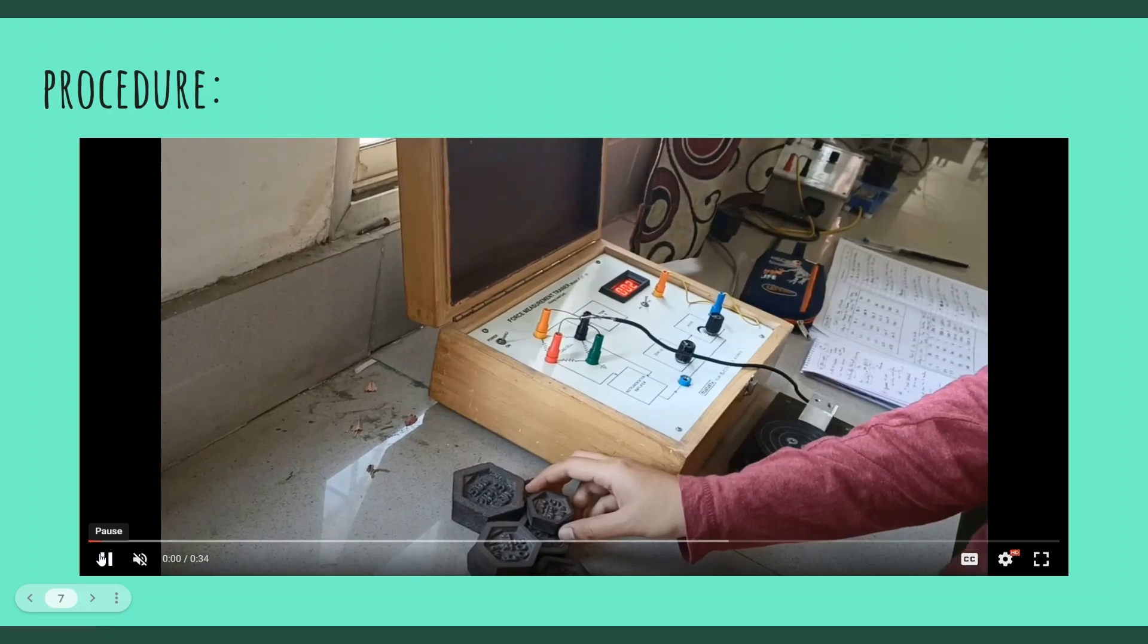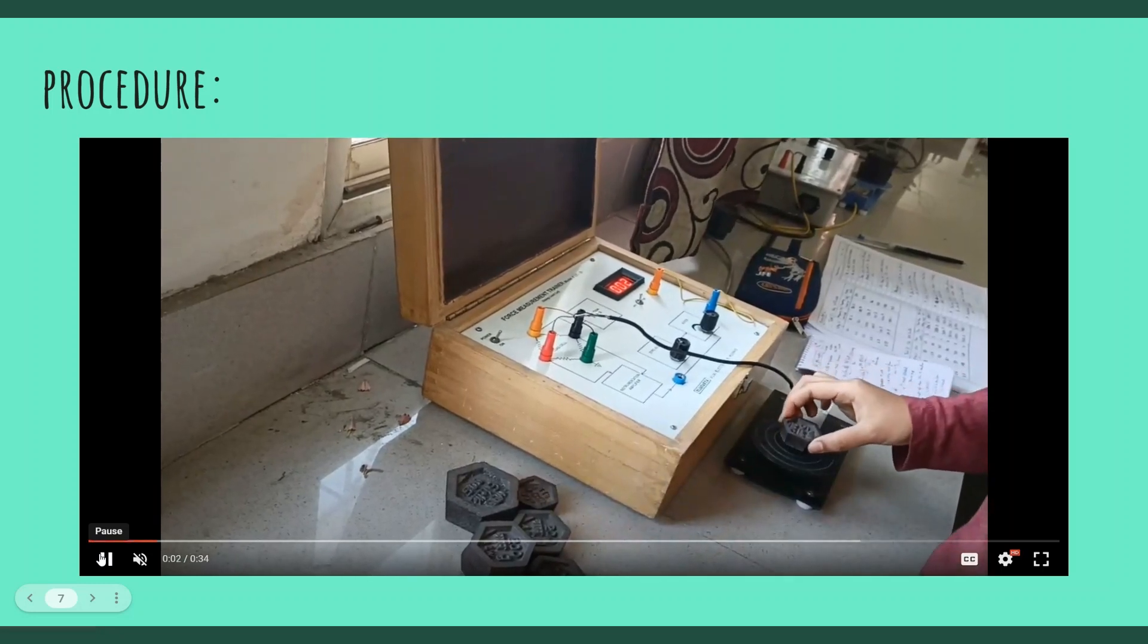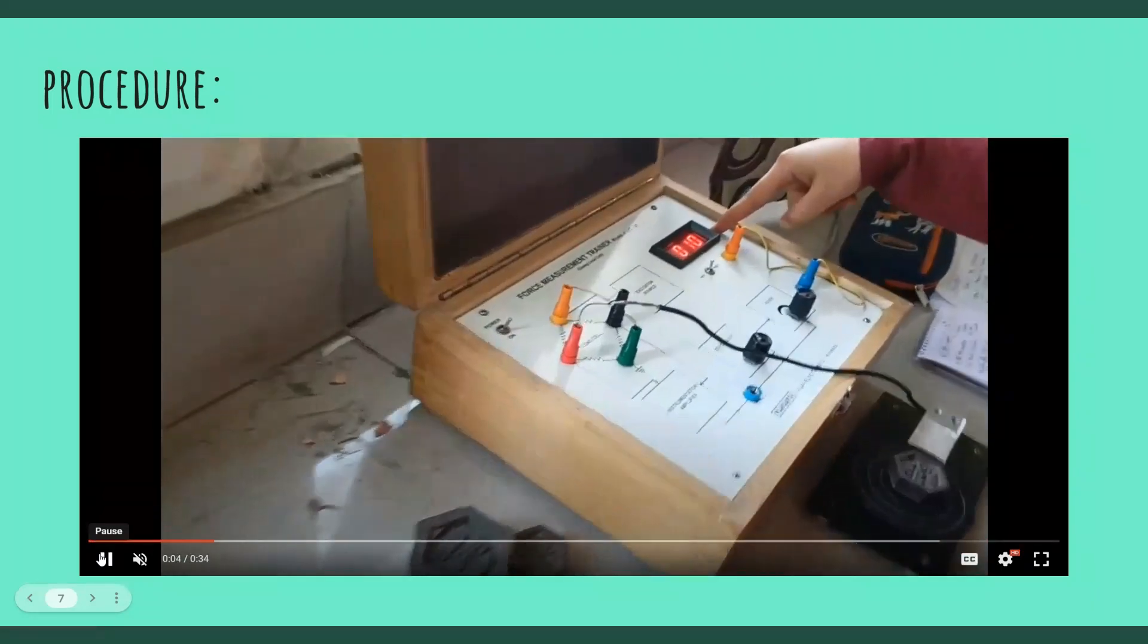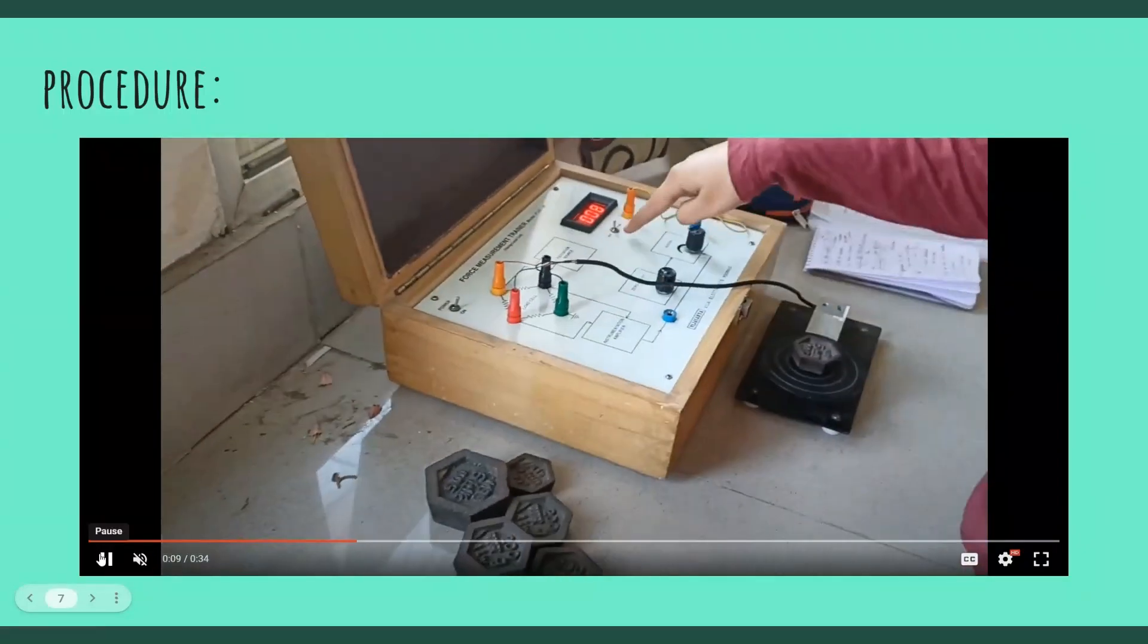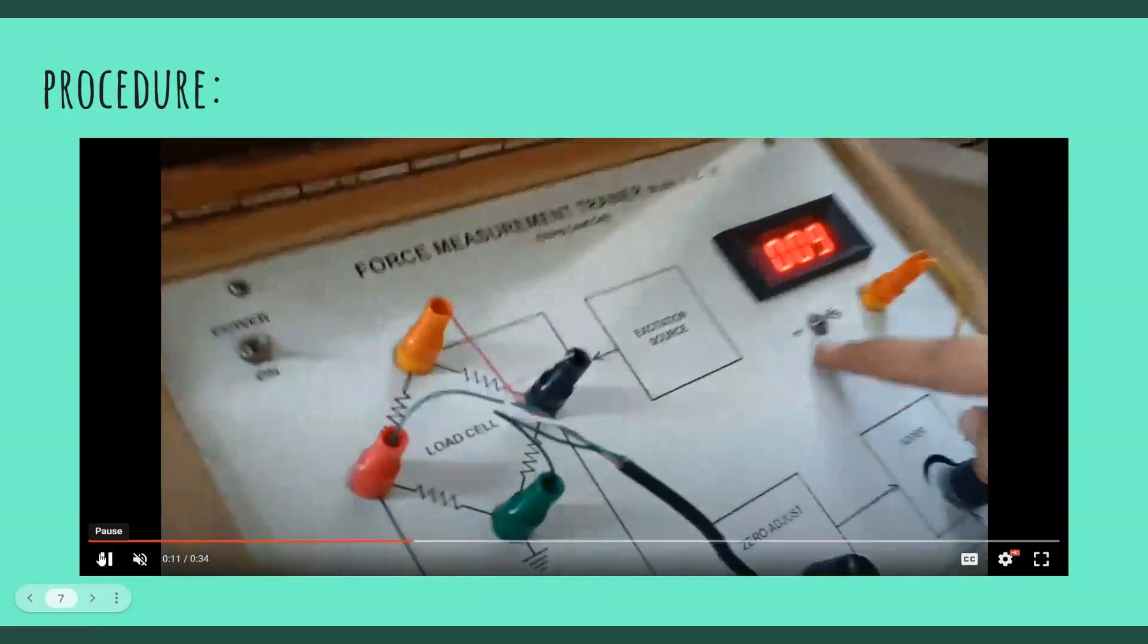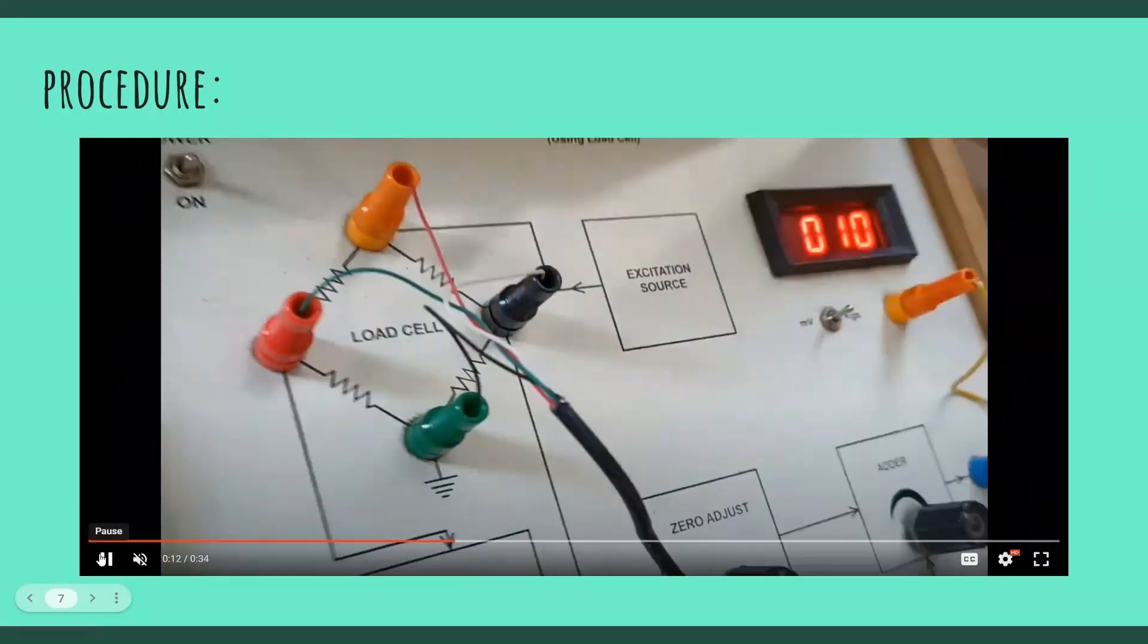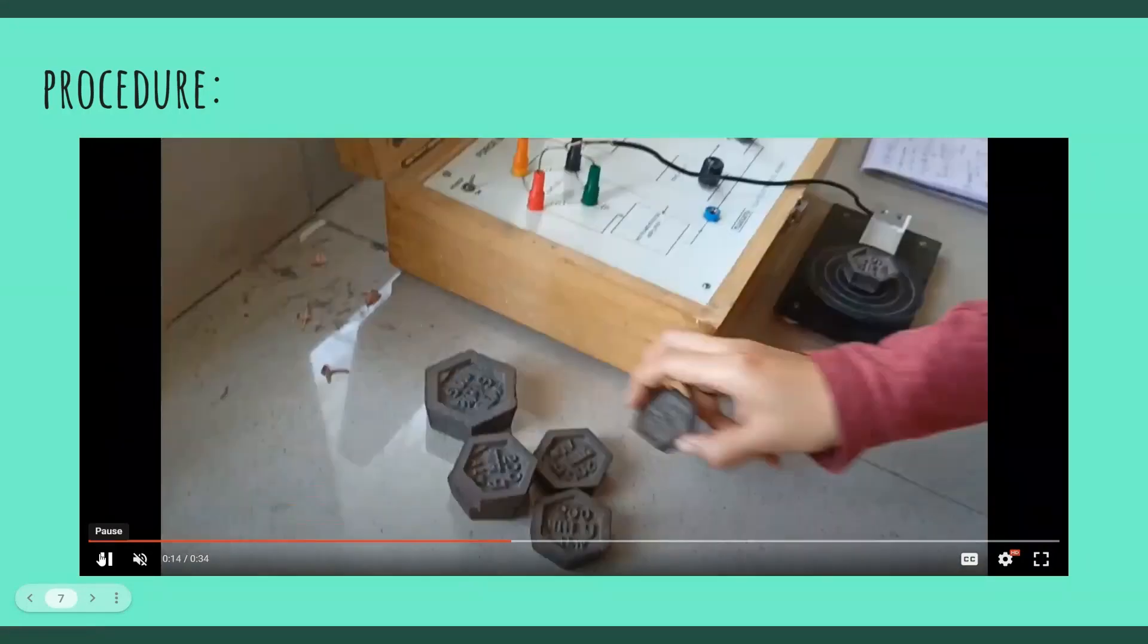Now looking into the procedure. First make the adjust knob to zero and make sure the toggle switch is switched to kilograms or millivolts as you required. Then keep loading the base slowly by increasing the weights.